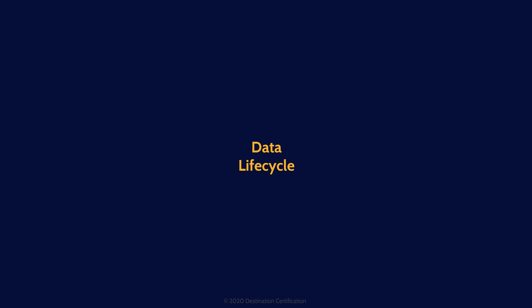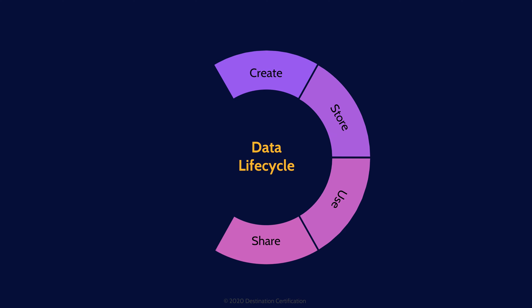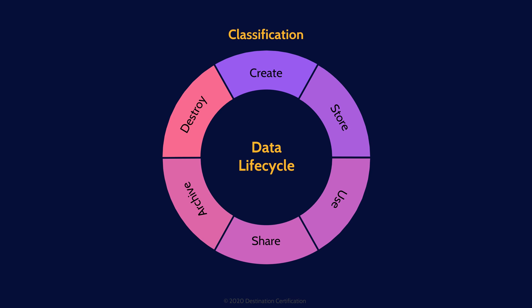What is the most important thing to do right at the very start of the data life cycle? Classify the data. The classification indicates how valuable the data is to the organization and therefore drives the controls that should be put in place in each stage of the data life cycle: where the data can be stored and with what level of encryption and access controls, who can access the data and for what purposes, who the data can be shared with and with what security controls in place, how long the data needs to be retained or archived, and the requirements for how securely the data needs to be destroyed. Are we melting hard drives or selling them on Craigslist without even formatting them?